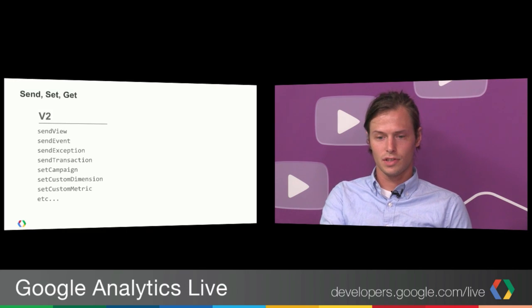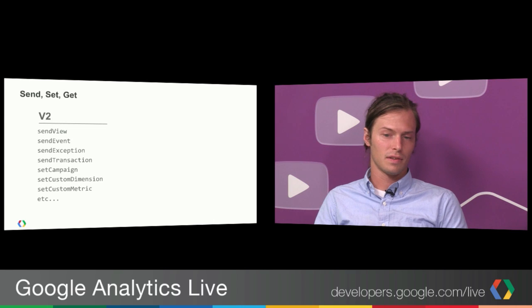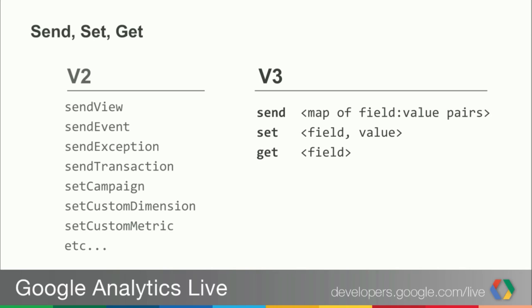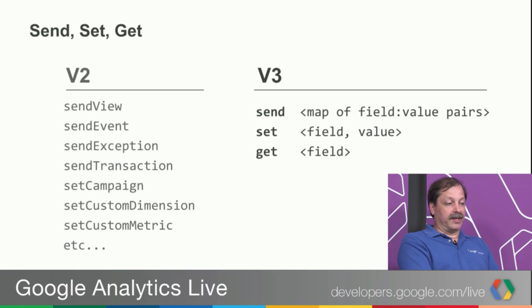In v2, method calls started with 'track' — trackView, trackEvent, trackException — then changed to 'send'. For v3, to align with other client platforms, all those special-purpose send methods were replaced with a single send method. Instead of sendView, you now call send and pass in a map of parameters (or dictionary on iOS) representing your hit type — whether that's app view, event, transaction, exception, etc.